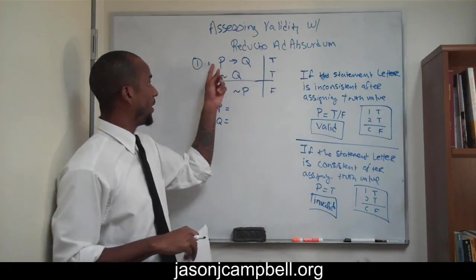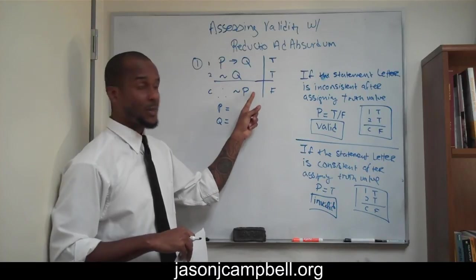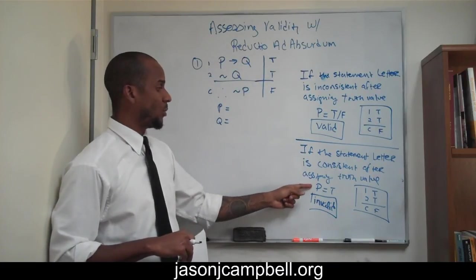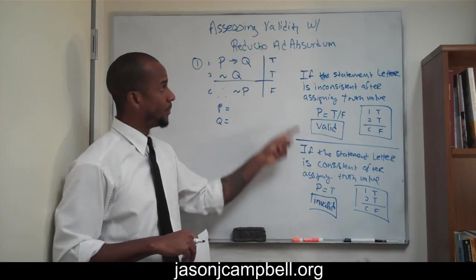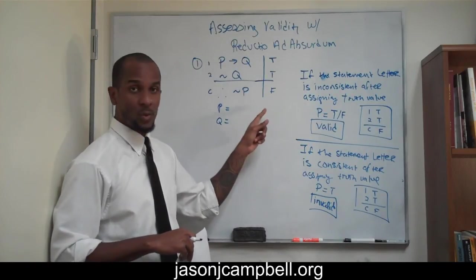We want this premise to be true, this premise to be true, this premise to be false. If we can create a state of affairs where the appropriation of just one truth function to any statement letter, if we can do that and attain this, then we know it's invalid.